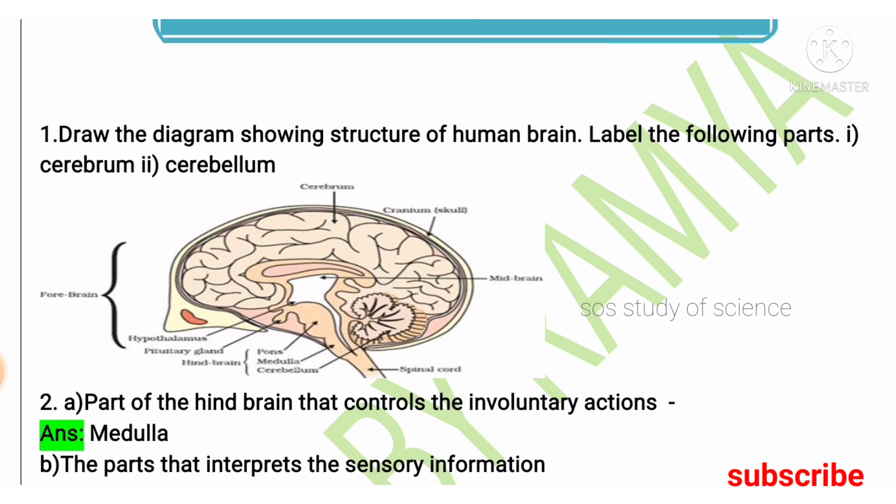The first and very important question: draw the diagram showing the structure of the human brain. This question can be expected for 4 marks. So do learn the human brain diagram and all the parts to label.